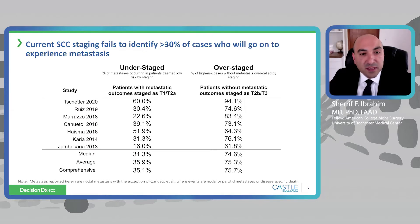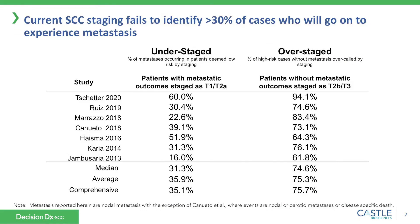When we look at the ability of current staging systems to identify patients at highest risk for metastasis, we see that staging alone fails to accurately predict this risk. We know that one in three patients with metastatic outcomes are misclassified as being low risk, and that three of four patients designated as high risk do not go on to have a metastatic event of either local, regional, or distant disease. Thus, the utility of clinical-pathologic risk factors alone is limited by their low positive predictive value.